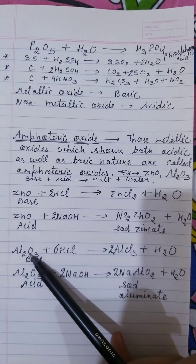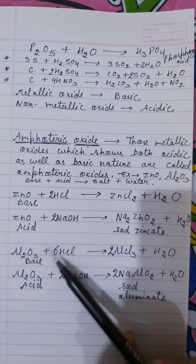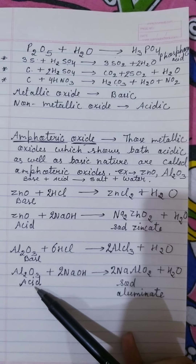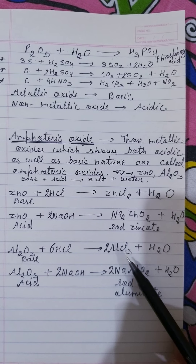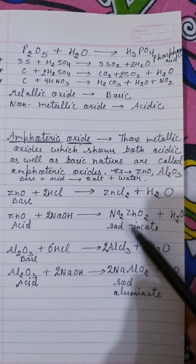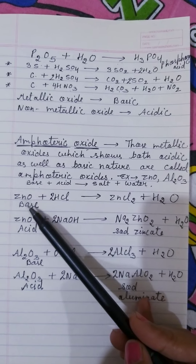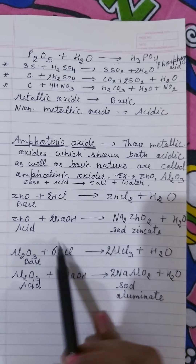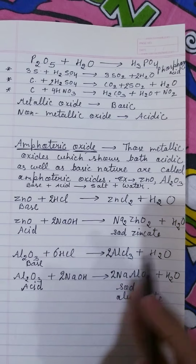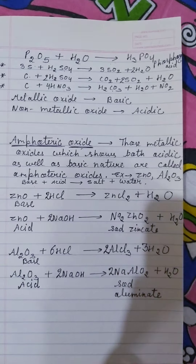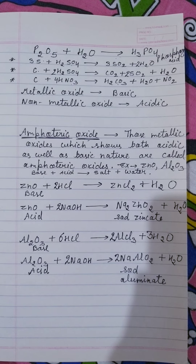The same happens with aluminum oxide (Al₂O₃): when it reacts with an acid it behaves as a base, and when it reacts with a base it behaves as an acid. The two different salts formed are aluminum chloride and sodium aluminate. I have done the balancing for your help — in the reaction you need to place a coefficient of three to balance the hydrogen. I hope you have all understood non-metallic oxides and amphoteric oxides.